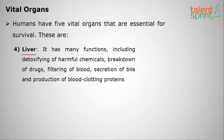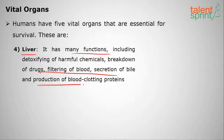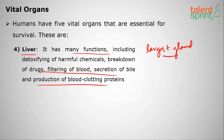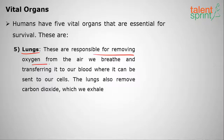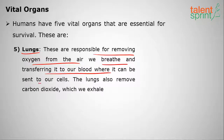The fourth vital organ is the liver, which has many functions including detoxifying harmful chemicals, breaking down drugs, filtering blood, and producing blood clotting proteins. It is the largest gland in the human body and secretes bile juice, which helps break complex molecules into simpler forms. The fifth vital organ is the lungs — they remove oxygen from the air we breathe, transfer it to our blood for delivery to cells, and remove carbon dioxide which we exhale.